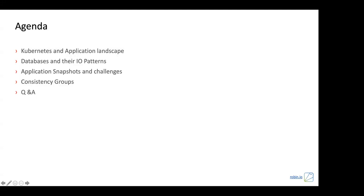I'm going to talk about the Kubernetes landscape, especially the application landscape on version 1.16, and what kinds of applications are suitable for running on Kubernetes. Then we'll dive into databases and their IO patterns, the challenges in snapshotting data-heavy applications on Kubernetes, and the core constructs that enable us to run these applications — specifically consistency groups. We'll have a brief Q&A session after that.